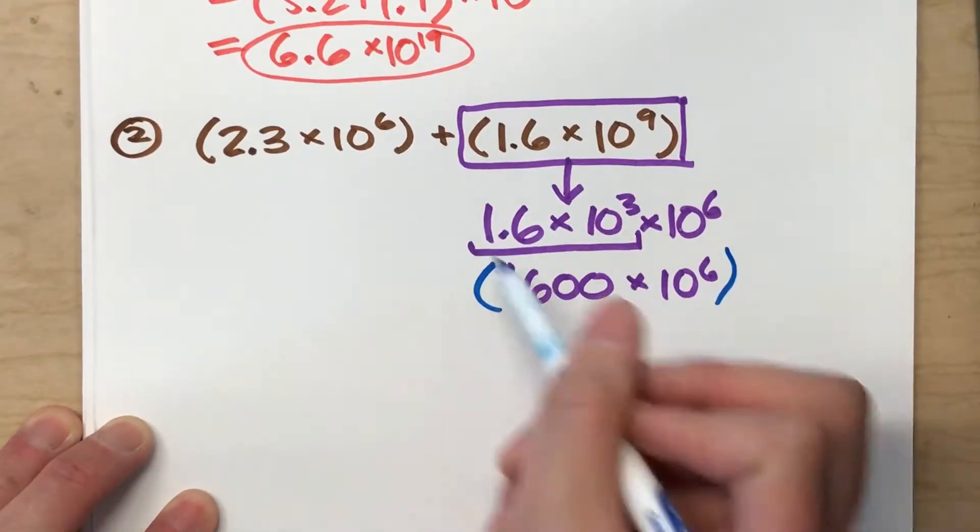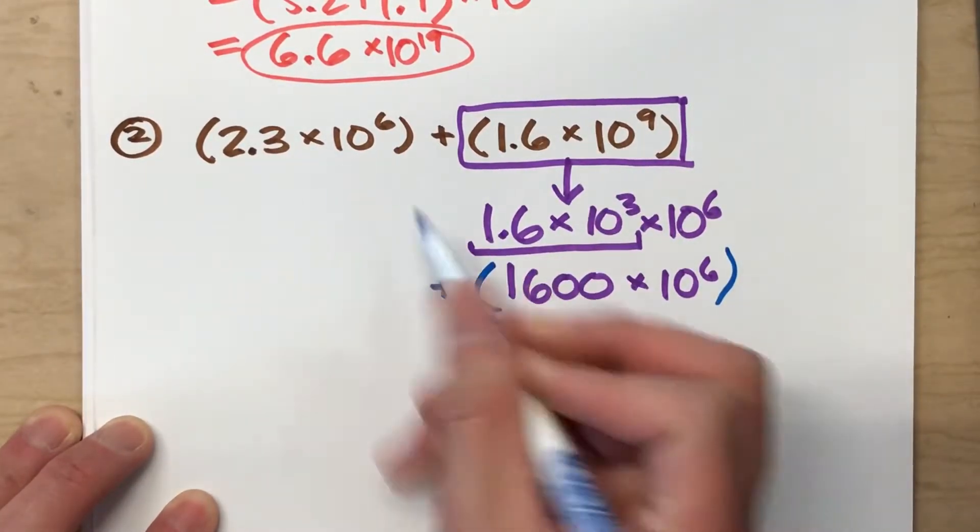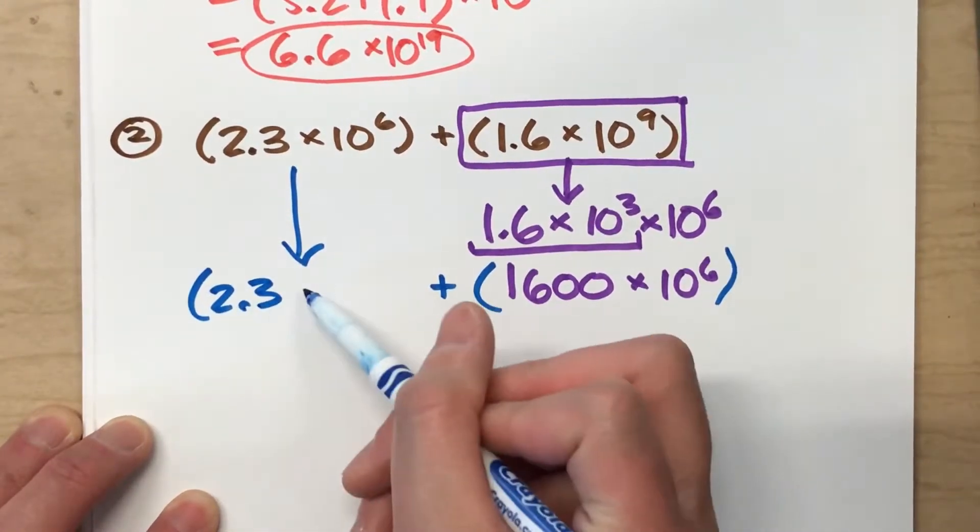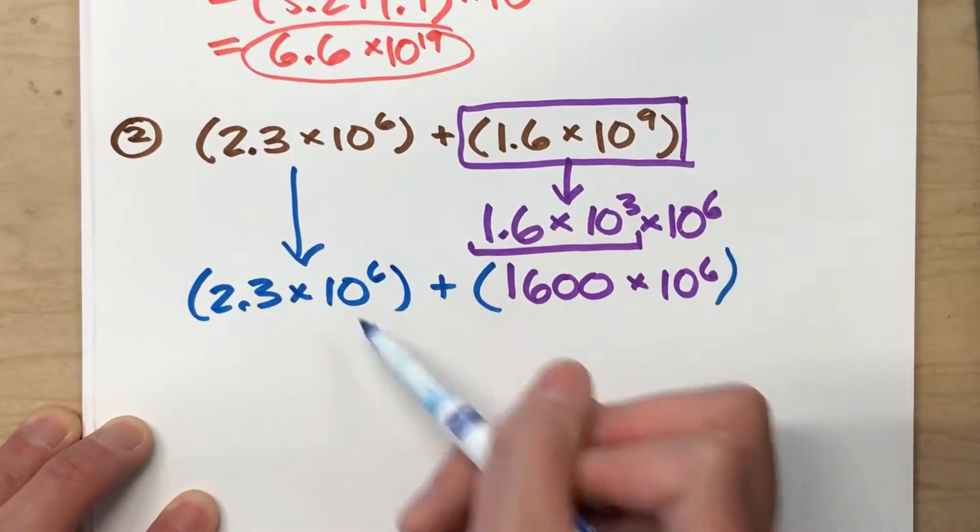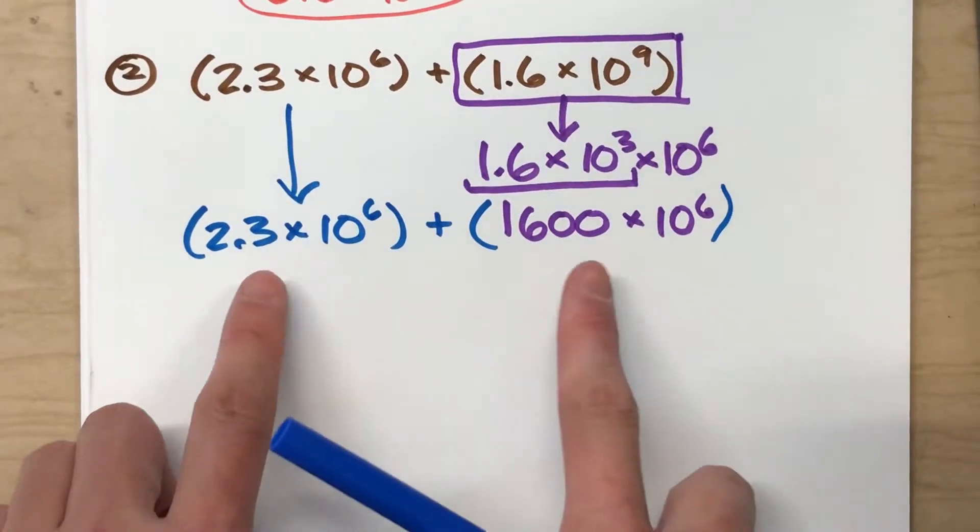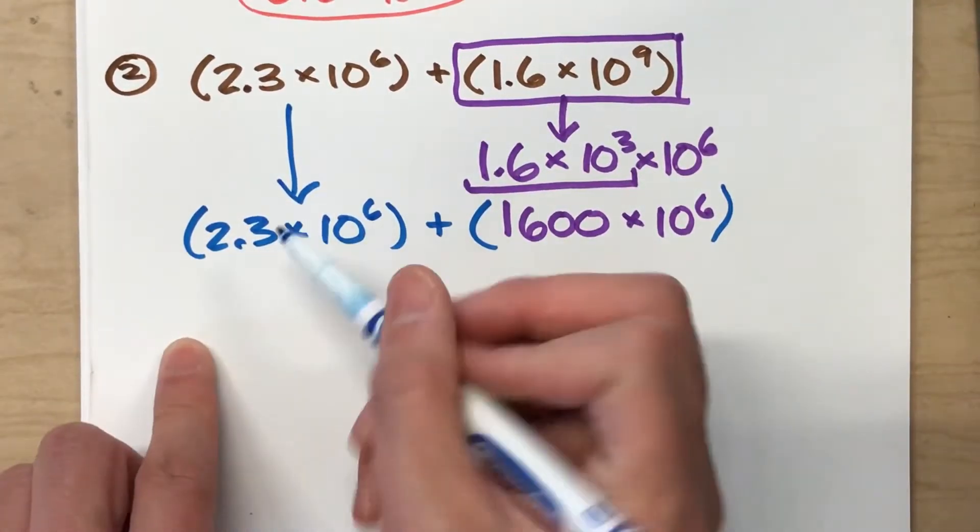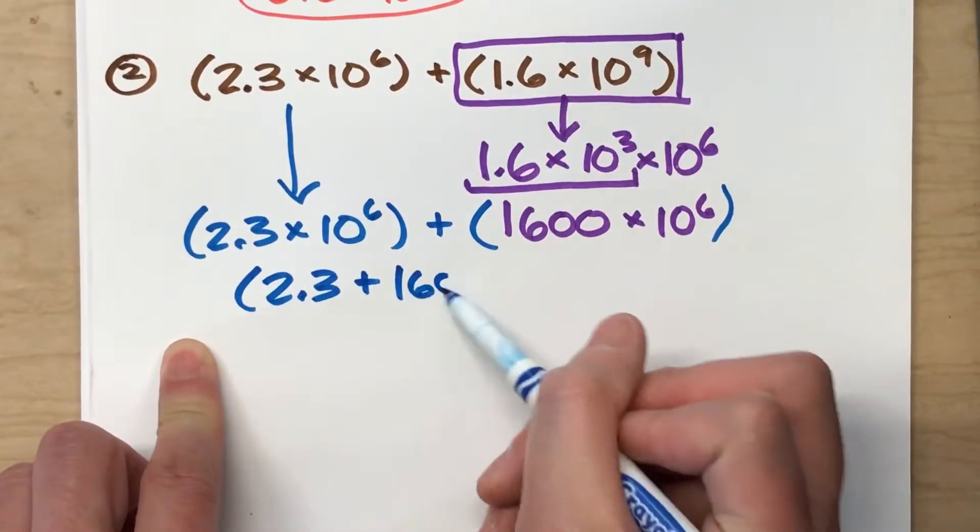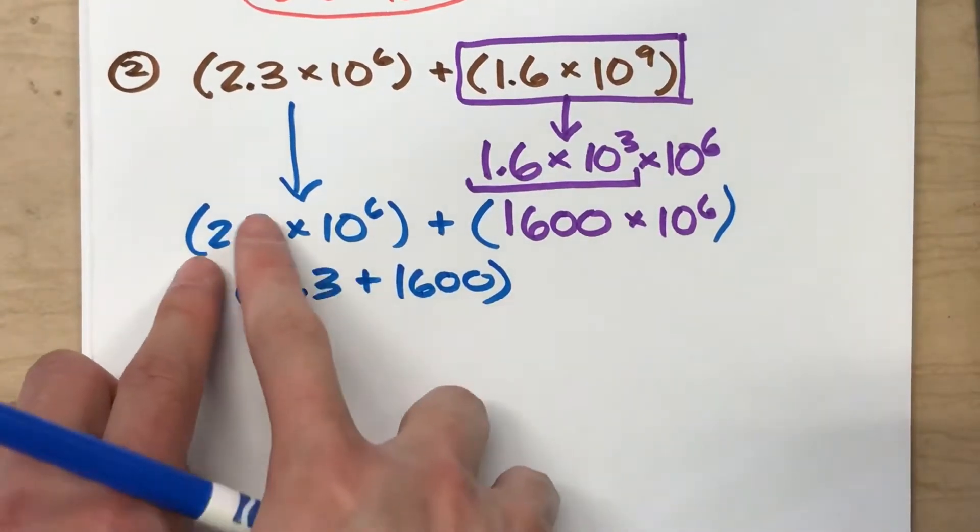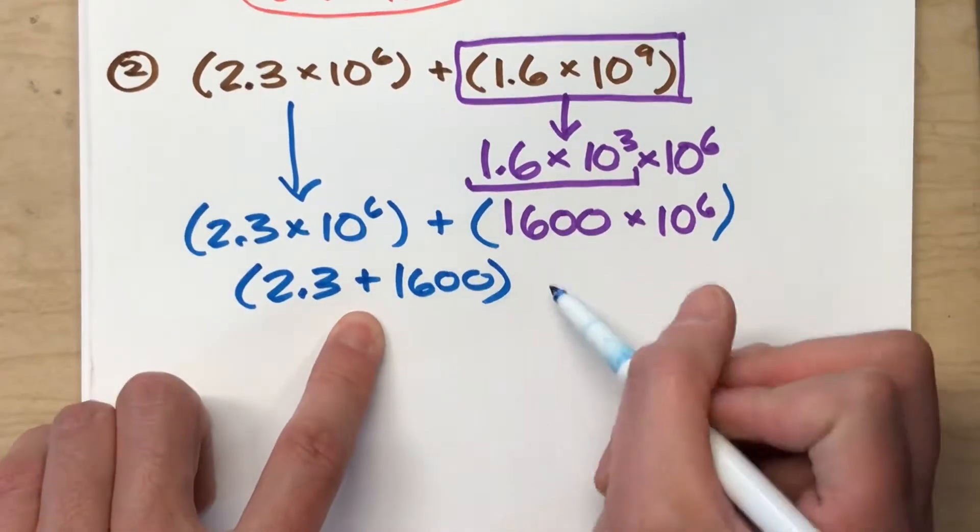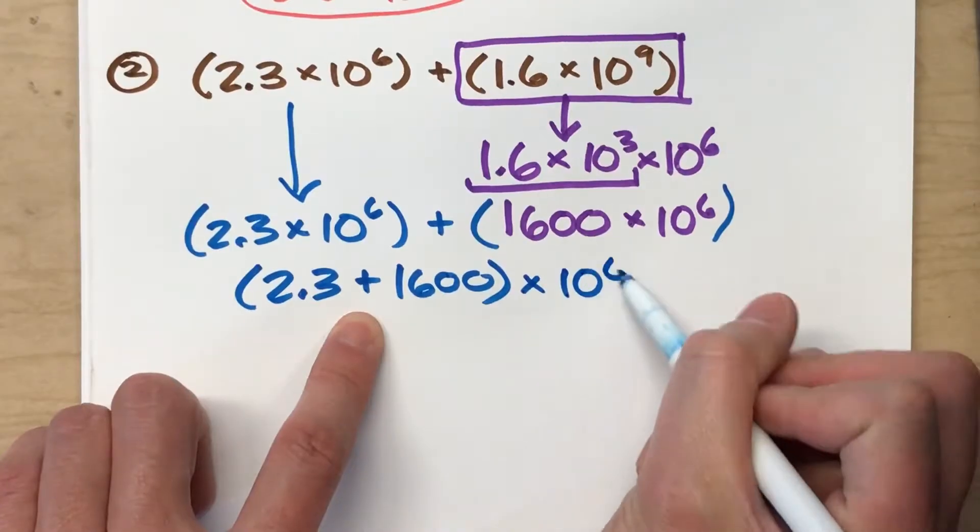So I'm going to rewrite the addition problem now. Here's the first number plus, I'm going to drop this guy down here, 2.3 times 10 to the 6th power. Now adding this is pretty easy because I take my two coefficients and add them together. And since both numbers are being multiplied by 10 to the 6th power, I can take this number and multiply it by 10 to the 6th power.